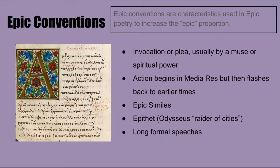Epic conventions are characteristics used in epic poetry to increase the epic proportion. Major conventions include an invocation or plea that is usually made by a muse or spiritual power. The story begins in media res, which means in the middle of the action, but then flashes back to earlier times. The poems contain epic or Homeric similes, which are long and elaborate comparisons that relate heroic events to simple everyday events.